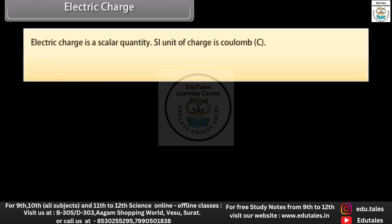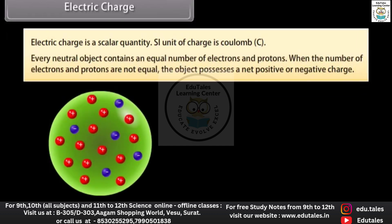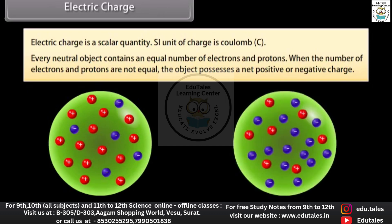Electric charge is a scalar quantity. The SI unit of charge is coulomb. Every neutral object contains an equal number of electrons and protons. When the number of electrons and protons are not equal, the object possesses a net positive or negative charge.